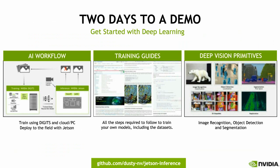One example codebase that's available and already uses TensorRT today is our Two Days to a Demo project on GitHub, which is an end-to-end tutorial of the AI workflow for training and deploying deep learning for computer vision. It uses NVIDIA DIGITS interactively in the cloud or PC along with deep learning datasets available online to train example models for image recognition, object detection, and segmentation. By following the comprehensive training guides, you can recreate the pre-trained models from scratch in two days or less, or even retrain with your own custom data to get the networks to recognize objects that it didn't know before. The project is open source and includes C++ code and prototxt for loading the trained networks from DIGITS and performing the runtime inference with TensorRT for each of the vision primitives.